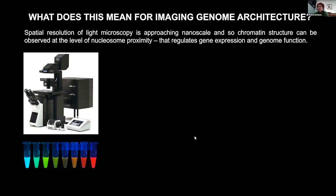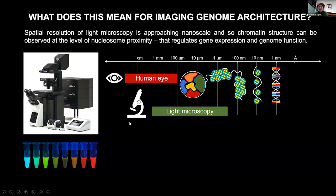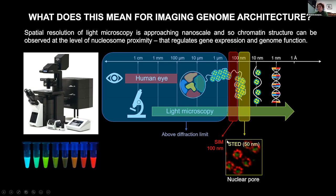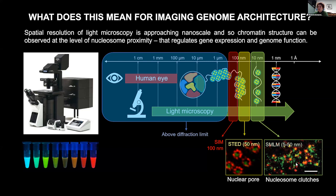What does this mean for genome architecture? The spatial resolution of light microscopy is now approaching the nanoscale. Before, we could just see chromatin structure at the level of DNA density, but now we can look at nucleosome proximity and how DNA arrangement in the cell nucleus actually regulates genome function. With structured illumination we can get down to 100 nanometers; with STED microscopy we can get down to 50 nanometers; and with single molecule localization microscopy we can see these beads-on-a-string structures and nucleosome clutches on a scale of 5 to 50 nanometers — comparable to electron microscopy. The problem, however, is that as we achieve higher and higher resolution, these methods have very poor temporal resolution, so we still can't see the dynamic rearrangements in the DNA network regulating gene expression.